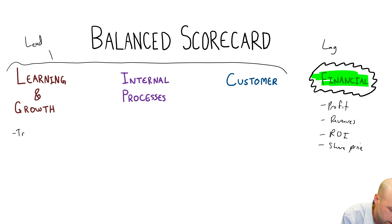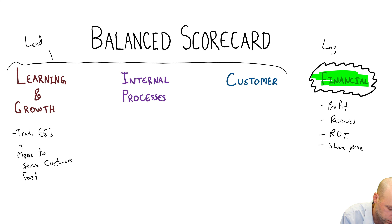The leading indicators are: learning and growth, internal processes, and customer. Here's an example using a bank. Maybe the profits aren't what the owners or shareholders hoped, so they survey their customers to figure out what's going wrong. Through those surveys they learn that their service is really slow — customers come in, stand in line, it just takes forever. They've identified that as one area they'd like to improve on.